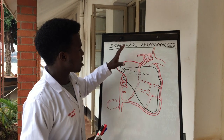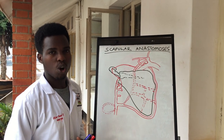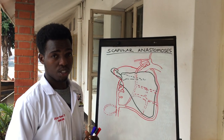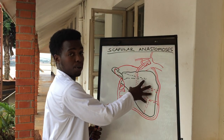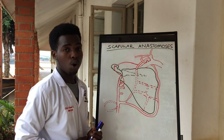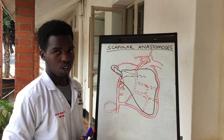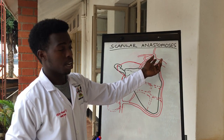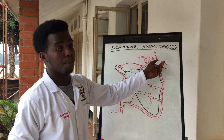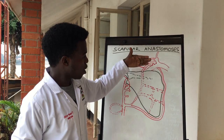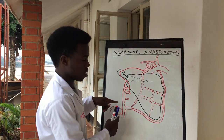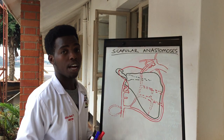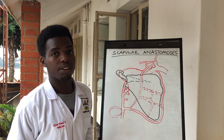In the scapular we see that there are two important anastomoses that occur. There is one that occurs at the body and one at the acromial process. The scapular anastomosis is contributed mainly by the branches of the subclavian artery together with other branches of the subscapular artery, which is a branch of the third part of the axillary artery.